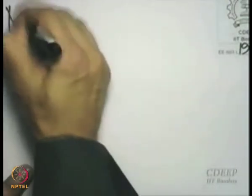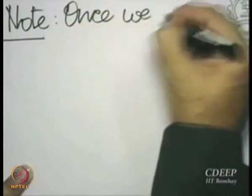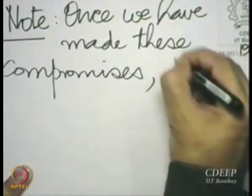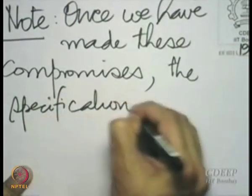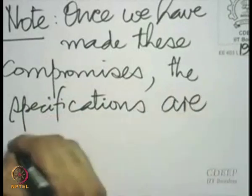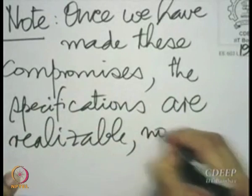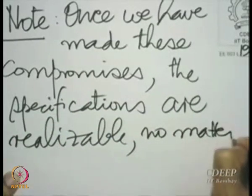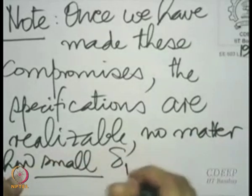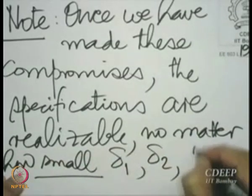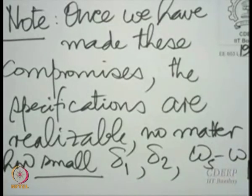We will note therefore that once we have made these compromises, the specifications are realizable — no matter how small delta_1, delta_2, and omega_s minus omega_p are.